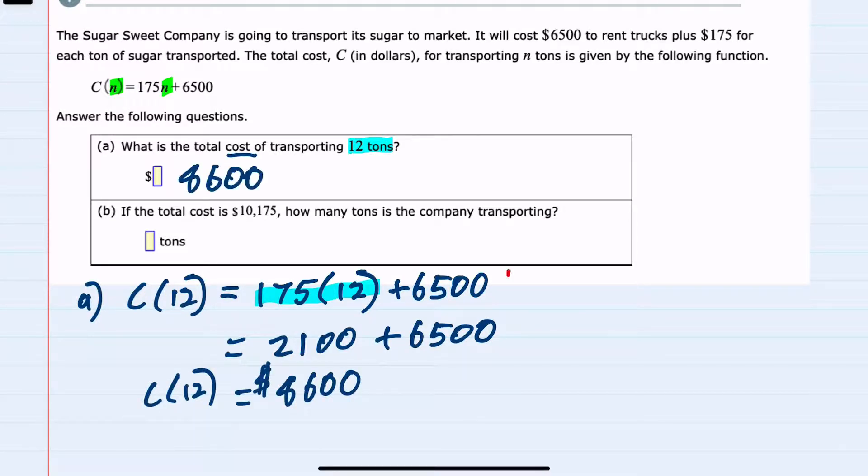And then for part B, we're given the total cost this time as $10,175 and we're asked to find the number of tons.